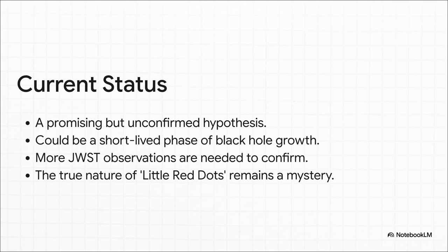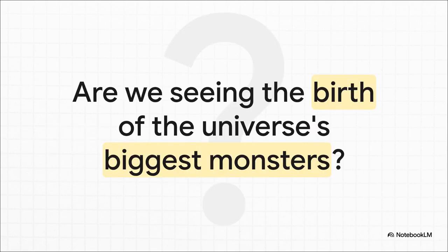Now, we have to pump the brakes just a little bit. This is still a very new idea - a hypothesis, a really promising one, but it's not confirmed yet. We need more data. It could be that these black hole stars are just a very short, temporary phase in a black hole's life. For now, the real identity of those little red dots is still officially a mystery. But it leaves us with this absolutely mind-blowing question: when JWST is staring at these tiny little red dots from the dawn of time, are we actually watching the birth of the universe's biggest monsters? Could we be looking right into a cosmic nursery for supermassive black holes? Only time and a lot more data is going to give us the answer.